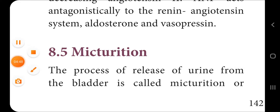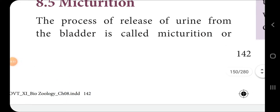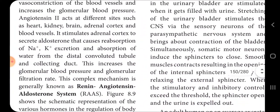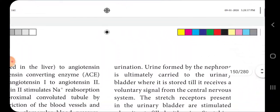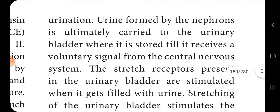ANF always acts antagonistically against the renin-angiotensin system, aldosterone, and vasopressin. The next topic is micturition. The process of release of urine from the bladder is called micturition or urination. Urine formed by the nephrons is ultimately carried to the urinary bladder, where it is stored until a voluntary signal is received from the central nervous system.